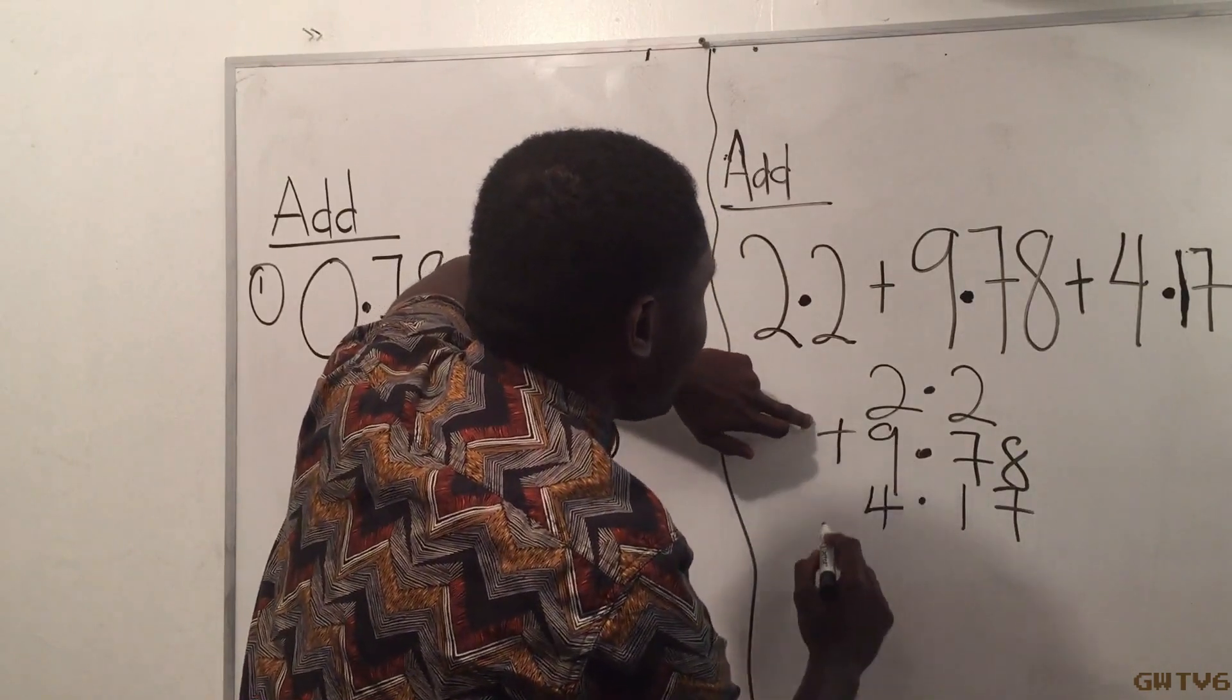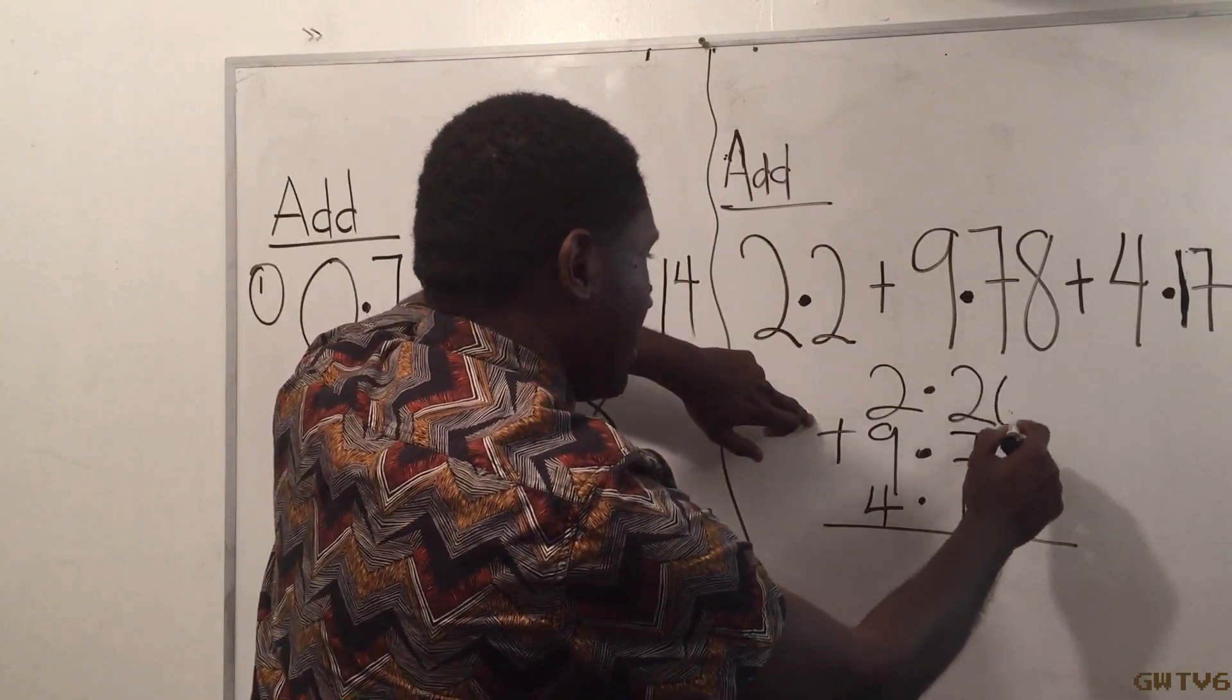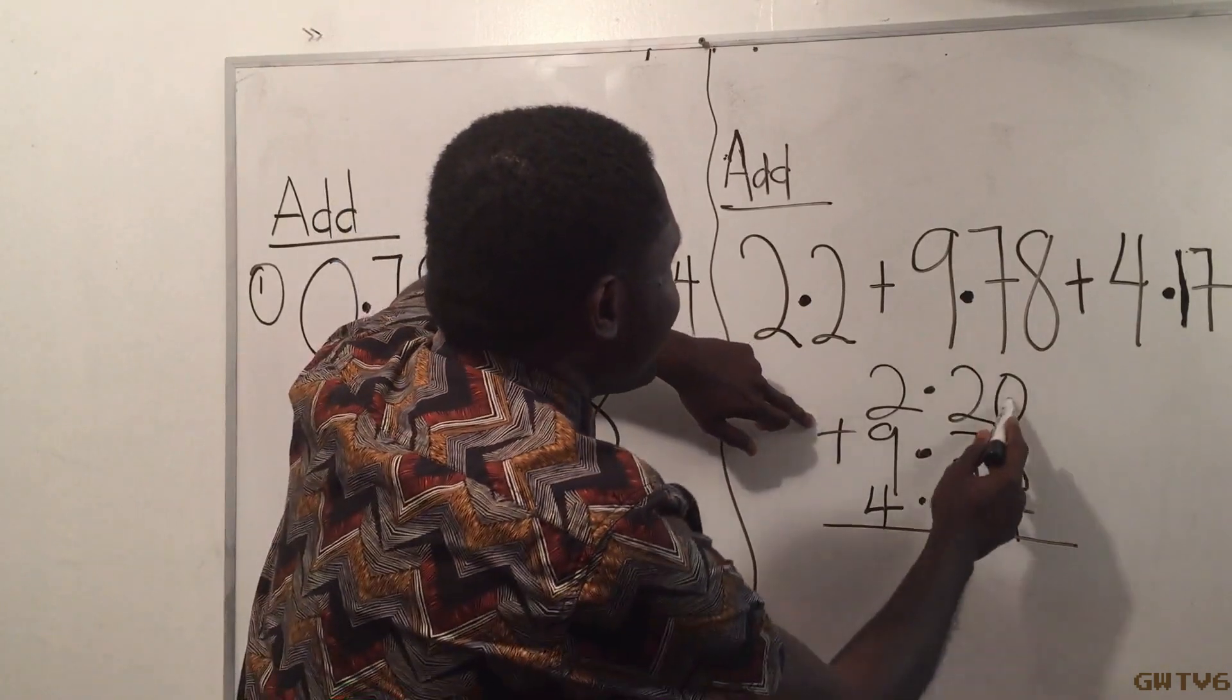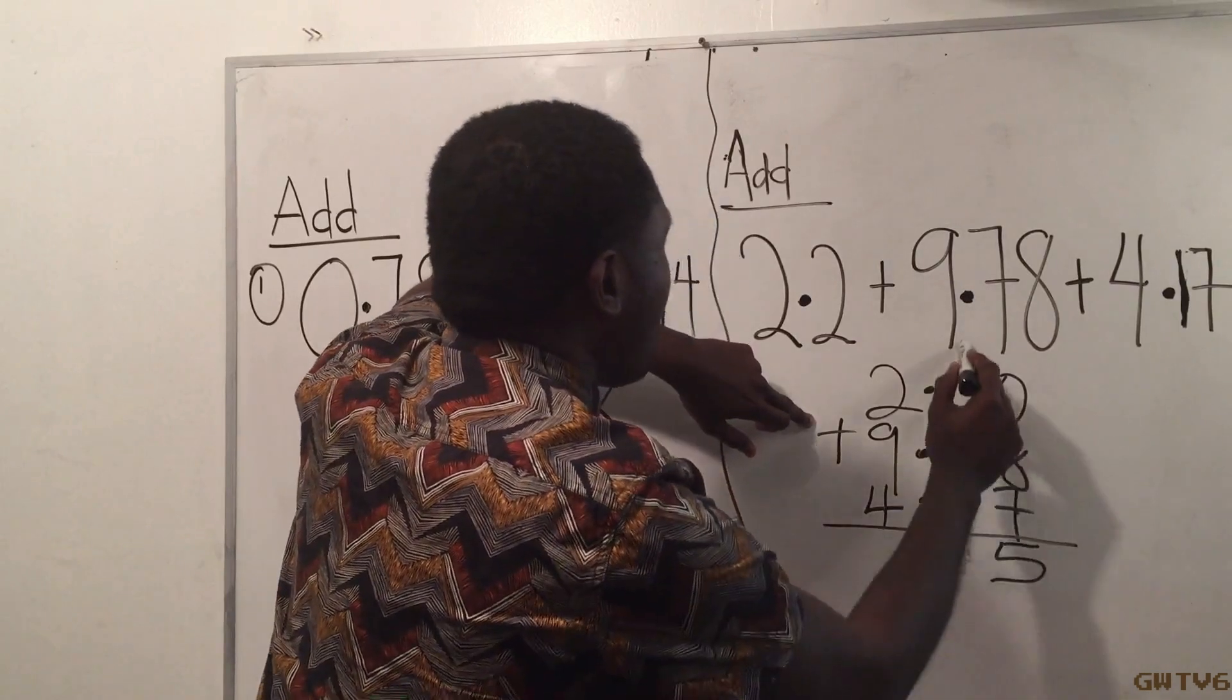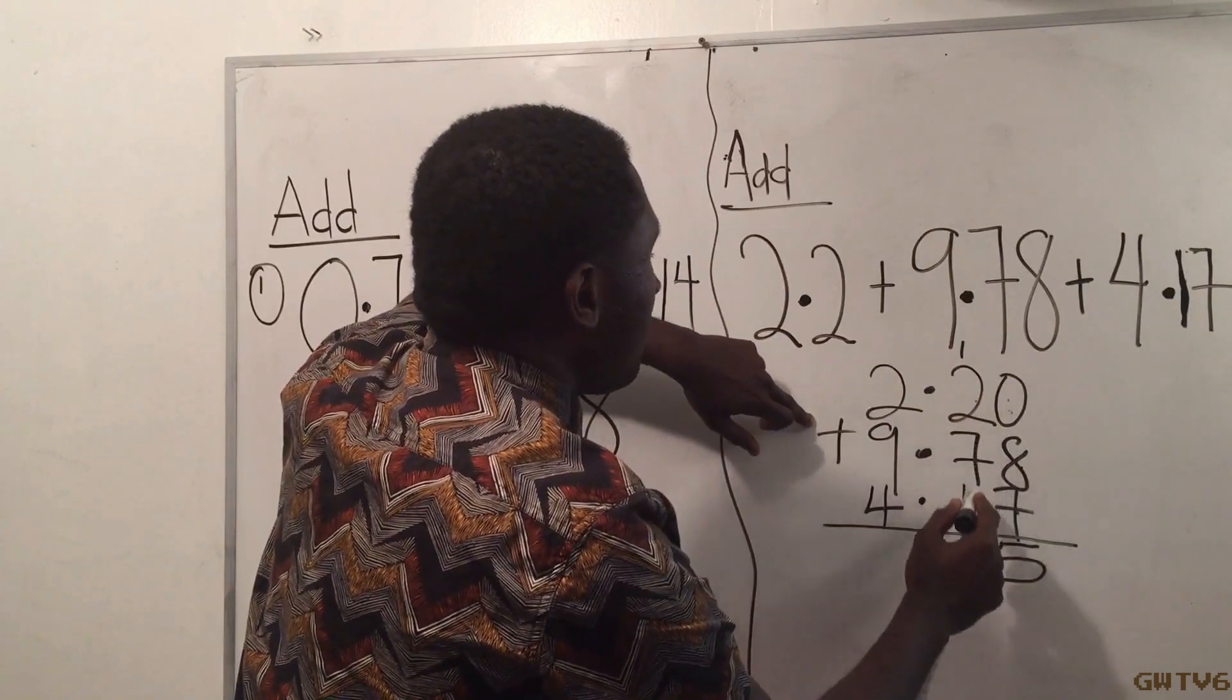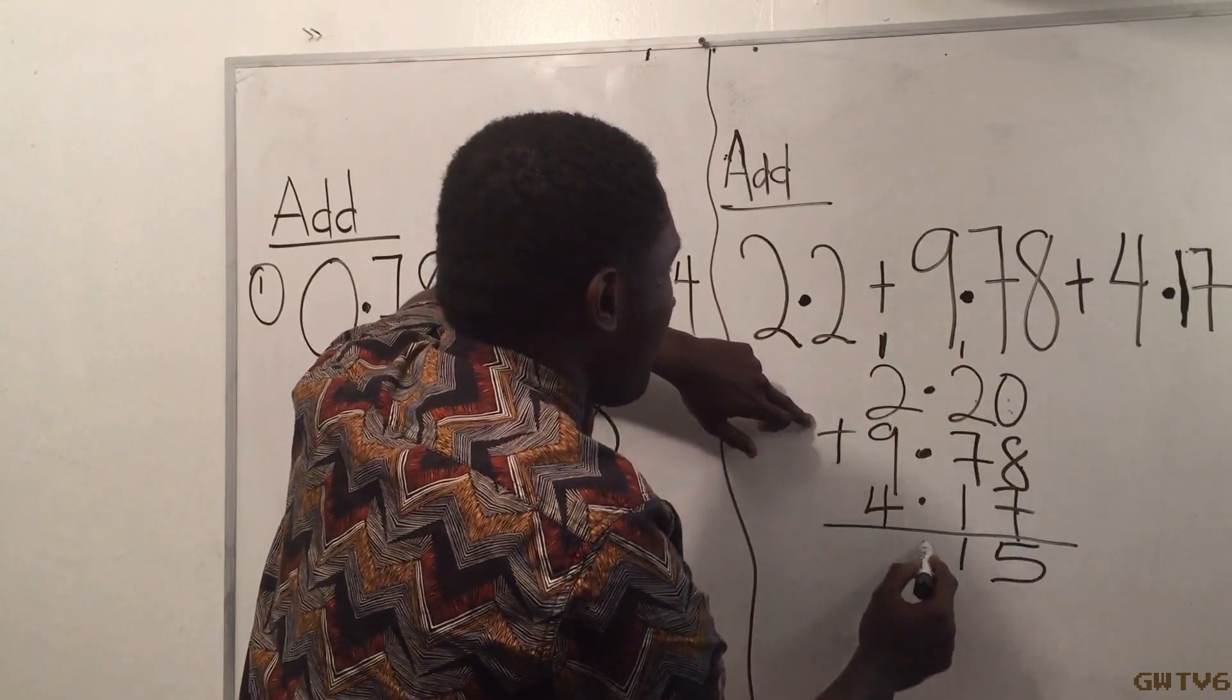I'm adding, so I'm gonna put a plus sign right here. I have to make sure everywhere is filled. I'm missing this part right here, so I'm gonna put a zero. Now I just add it. 0 plus 8 is 8, plus 7 is 15. I put in 5, I carry 1. 1 plus 2 is 3, plus 7 is 10, plus 1 is 11. I put my 1, I carry my 1. I put my decimal point.